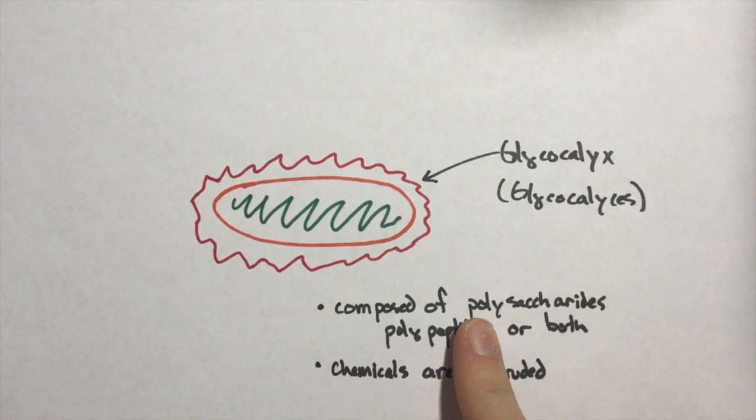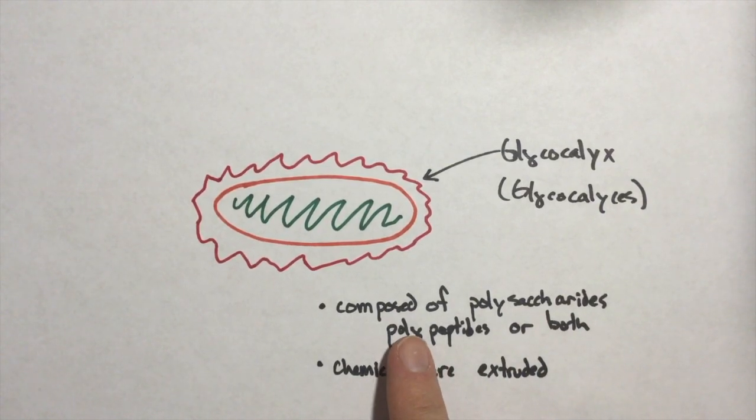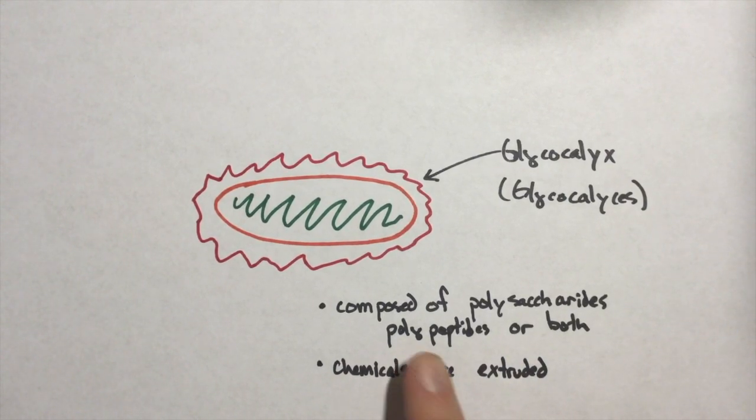So polysaccharides would be multiple or chains of multiple sugars all stacked on top of each other and bonded to each other. Polypeptides would be multiple amino acids in a chain, which is essentially what proteins are, folded polypeptides. Or it can be composed of both. So it can be a mixture between these two.